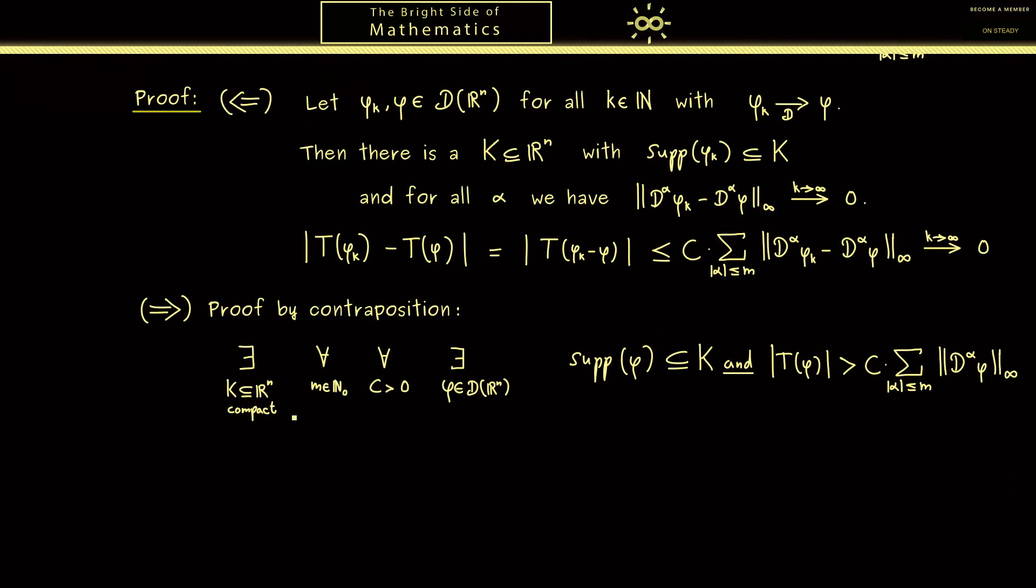Now recall this whole thing means there is a compact set, but then no matter which m and c we choose, we always find a corresponding phi. Therefore let's go through all the natural numbers k for c and m and take the corresponding phi_k. This means that we have |T(phi_k)| times the sum where we have the maximal order for the derivatives as k. Please don't forget the absolute value around a multi-index just means that you add up all the components. So no matter how you combine all the partial derivatives, the maximal order you get out is always k. Also important to note is that we have the zero multi-index as well in this sum, which means we have the supremum norm of phi_k here.